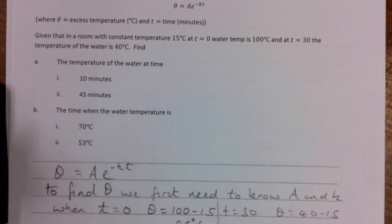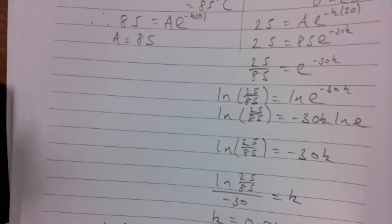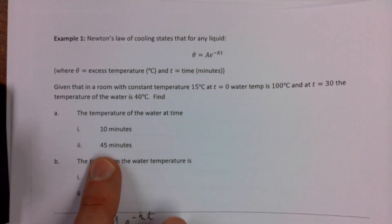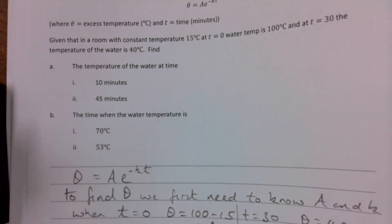So let's take a look at our next page. We want to use this formula here to work out for 10 minutes and 45 minutes, and then the formula again kind of backwards really for the 70 and the 53.